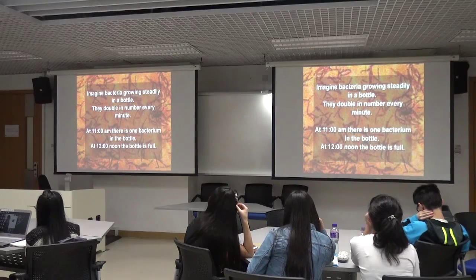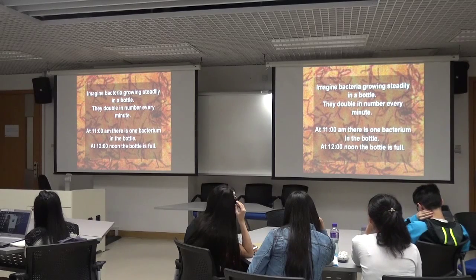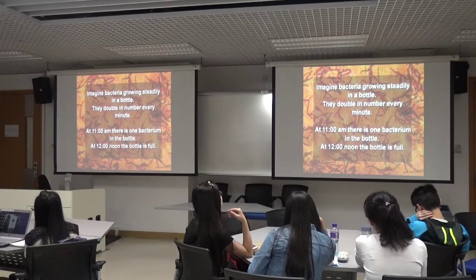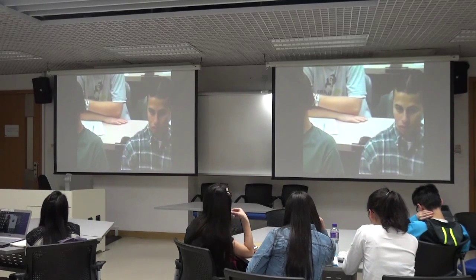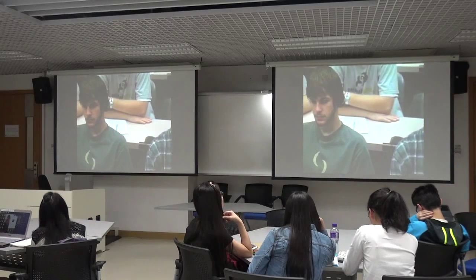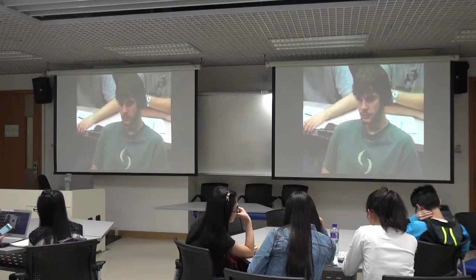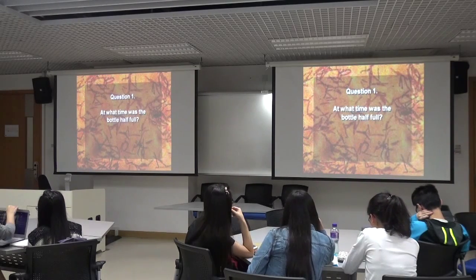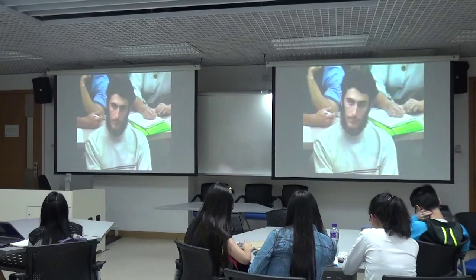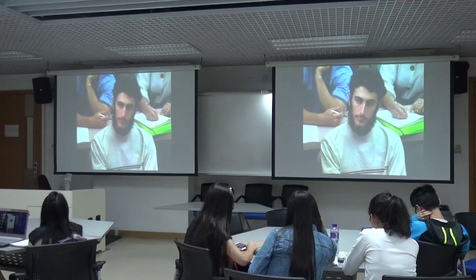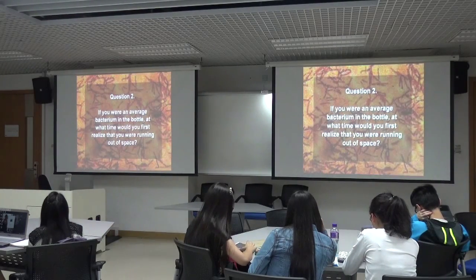Bacteria grow by doubling: one bacterium divides to become two, two become four, four become eight, sixteen, and so on. Suppose we have bacteria that double every minute. We put one bacterium in an empty bottle at 11 in the morning, and observe that the bottle is full at 12 noon. First question: at what time was the bottle half full? The answer is 11:59 — one minute before 12, because they double every minute. Second question: if you were an average bacterium in that bottle, at what time would you first realize you were running out of space? Think about this — this kind of steady growth is a centerpiece of the national and global economy.